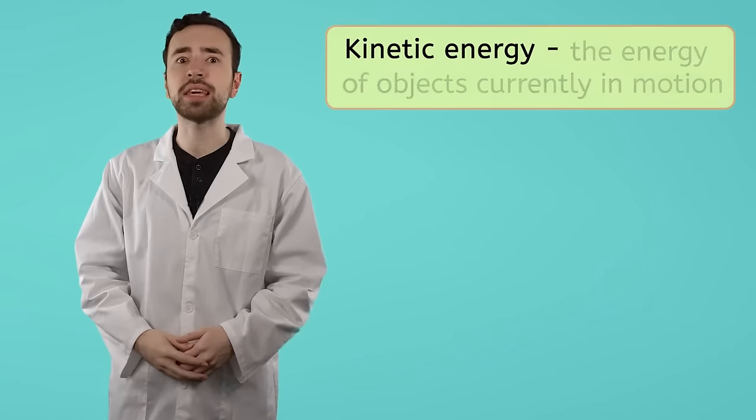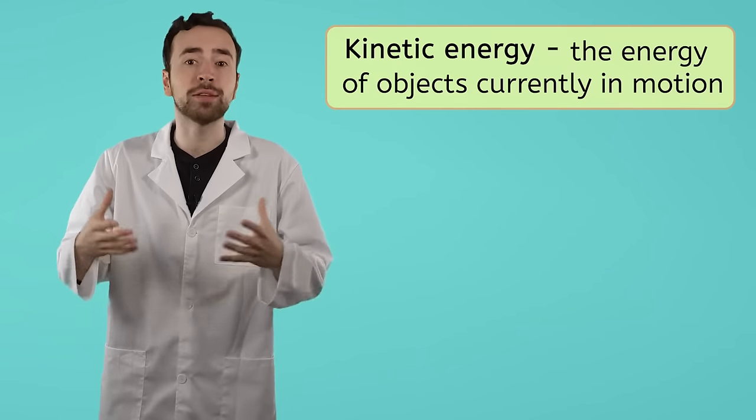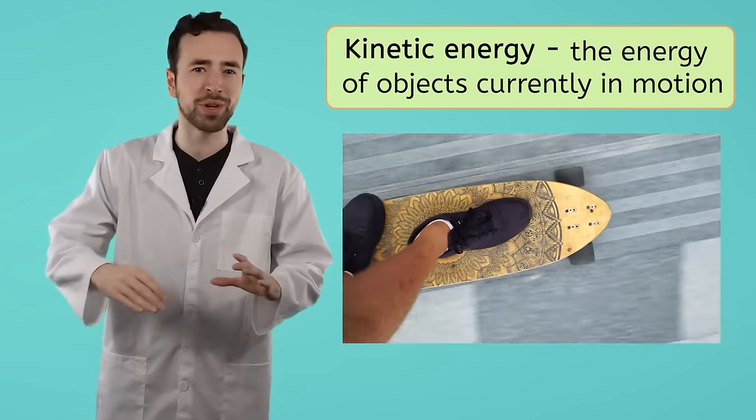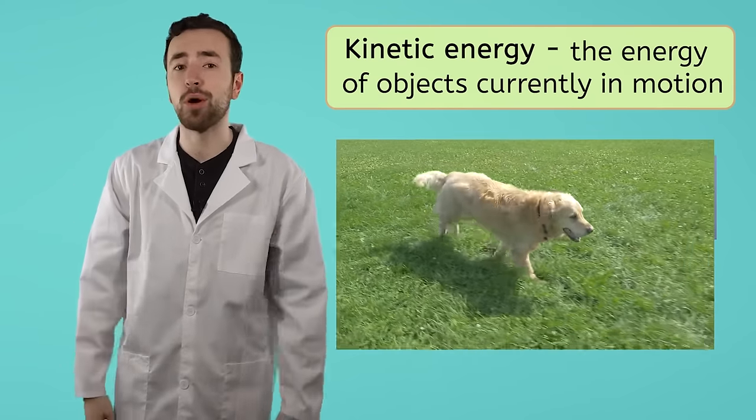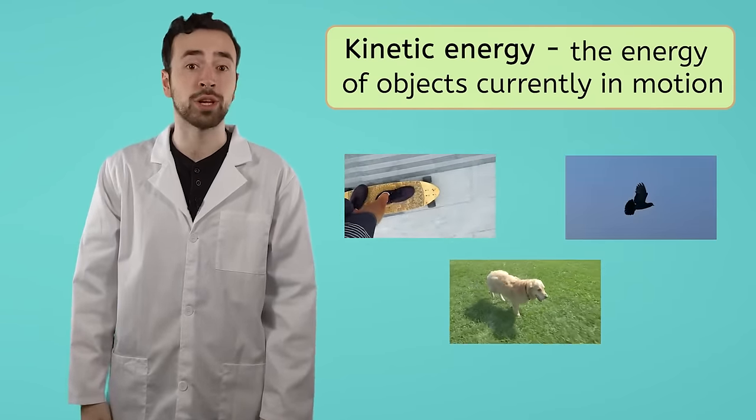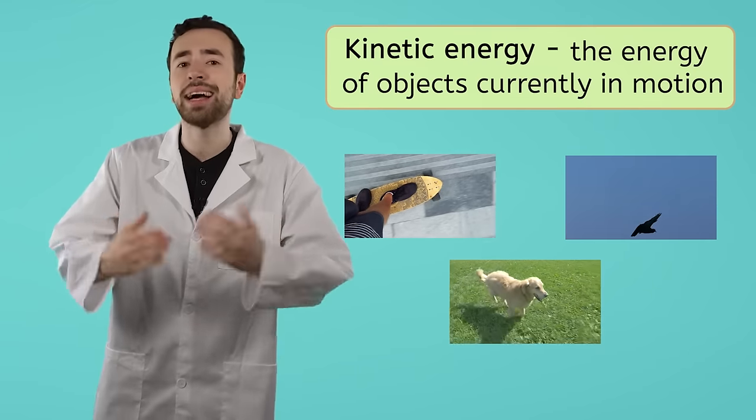Kinetic energy is the energy of objects currently in motion. A skateboarder zooming down the street, a bird flying through the air, and a dog running after a ball all have kinetic energy. If it's in motion, it has kinetic energy.